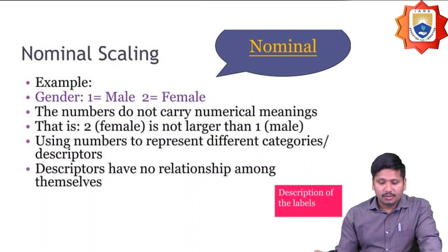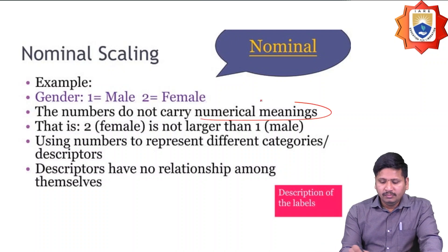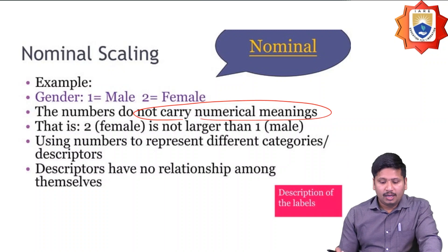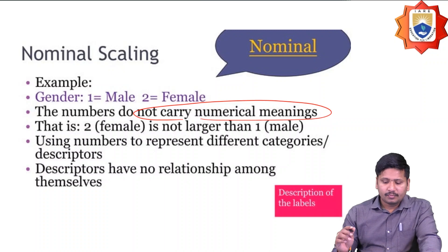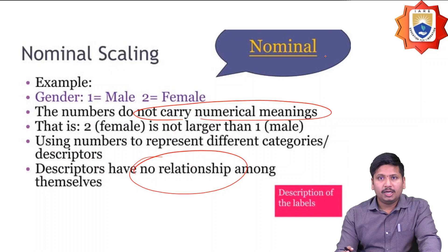Nominal scaling: for example, gender — male or female. Here, the numbers do not carry any numerical meaning. The number 2 for female is not larger than 1 for male in any meaningful sense. Numbers simply represent different categories, and the descriptors have no relationship among themselves — no order or numerical relationships are considered.